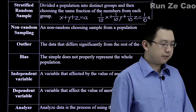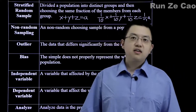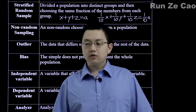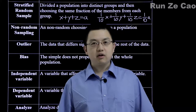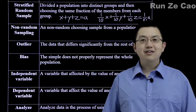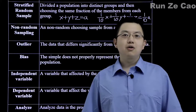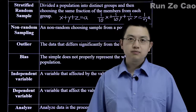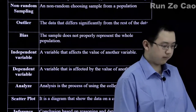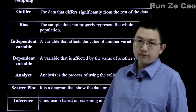Non-random sampling is a way of choosing a sample that's not random. For example, convenience sampling — it's called that because it's convenient. Say you invite your friends to determine whether or not your new cake recipe is delicious. That's going to be biased, because your friends are not going to want to annoy you by telling you that your new cake recipe is not particularly good. They're all going to say great, great, great.